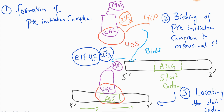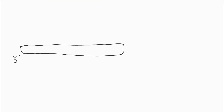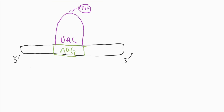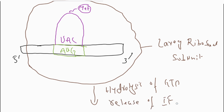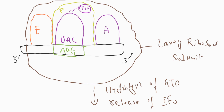When the pre-initiation complex locates the start codon on the messenger RNA, the next step is binding of the large ribosomal subunit, the 60S subunit. The large ribosomal subunit binds to the messenger RNA, which results in hydrolysis of GTP and release of the initiation factors. The large ribosomal subunit contains three sites: the E site (exit site), the P site (polypeptide site), and the A site (aminoacyl-tRNA binding site).